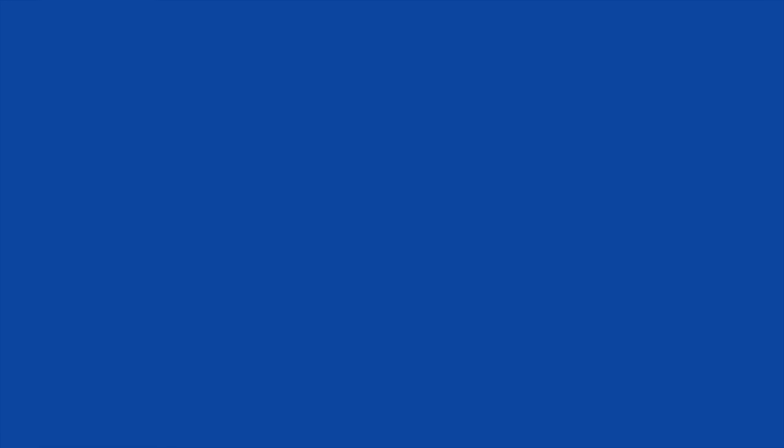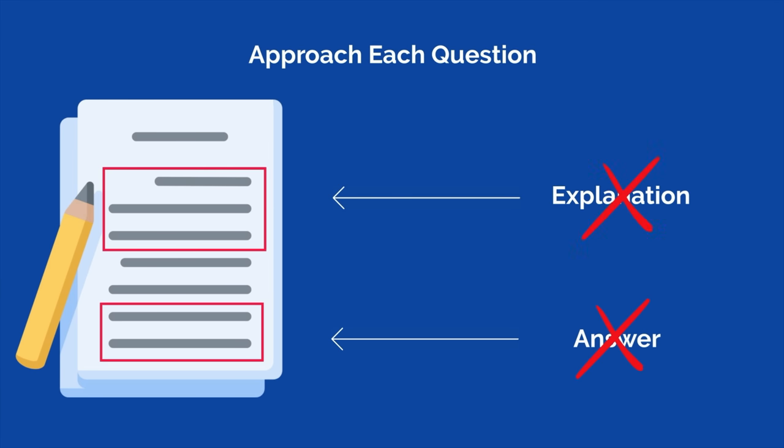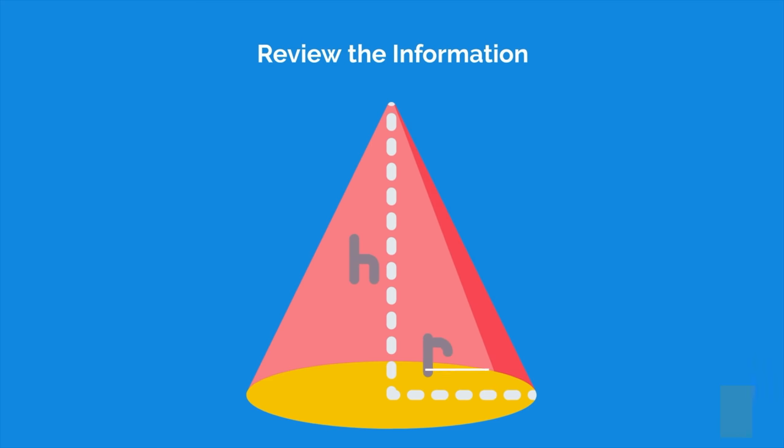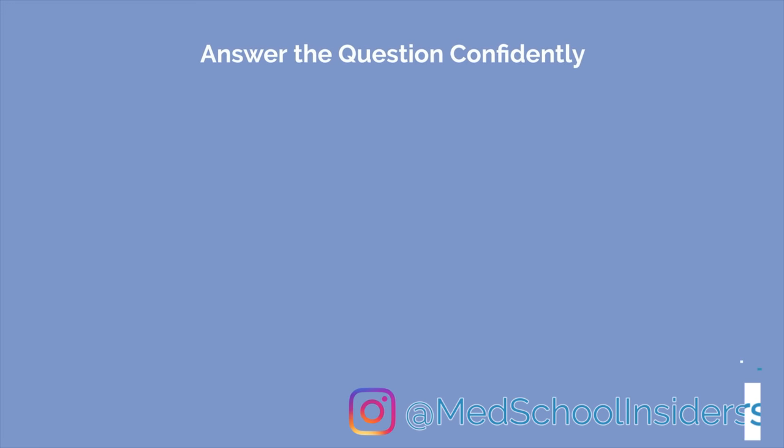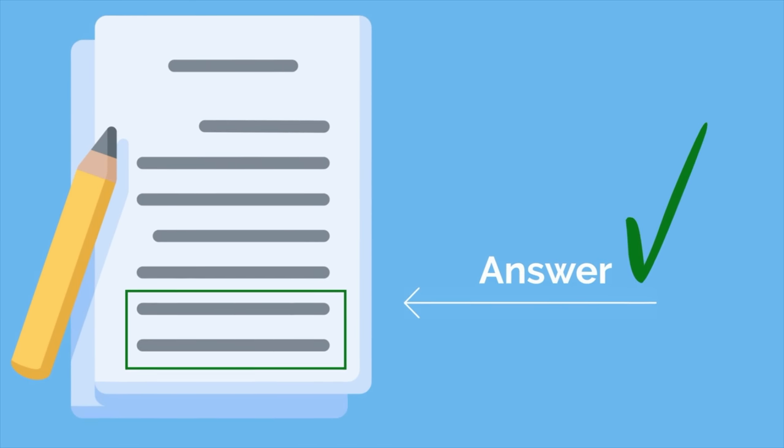To get the most out of each practice session, you need to approach each question as if it were the real thing. If you don't know how to solve it, don't just read the correct answer and explanation. Give it considerable effort before you review an equation or other helpful piece of information. And if that's still not enough to answer the question confidently, go back through your notes and create what you feel to be a perfect answer. Only then should you check the correct answer and see how yours compares.